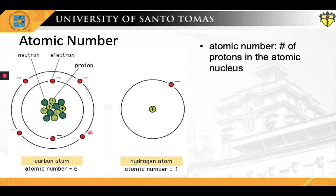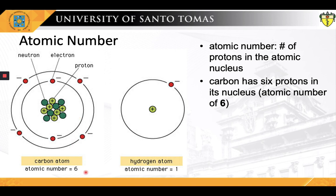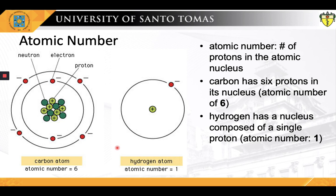As shown, the atom on the left has an atomic number of six — this means it has six protons in its nucleus, and if uncharged, also six electrons. The atom on the right represents the smallest atom, with an atomic number of one, possessing only one proton and, if uncharged, only one electron. This atom, hydrogen, is special because it does not possess any neutron.